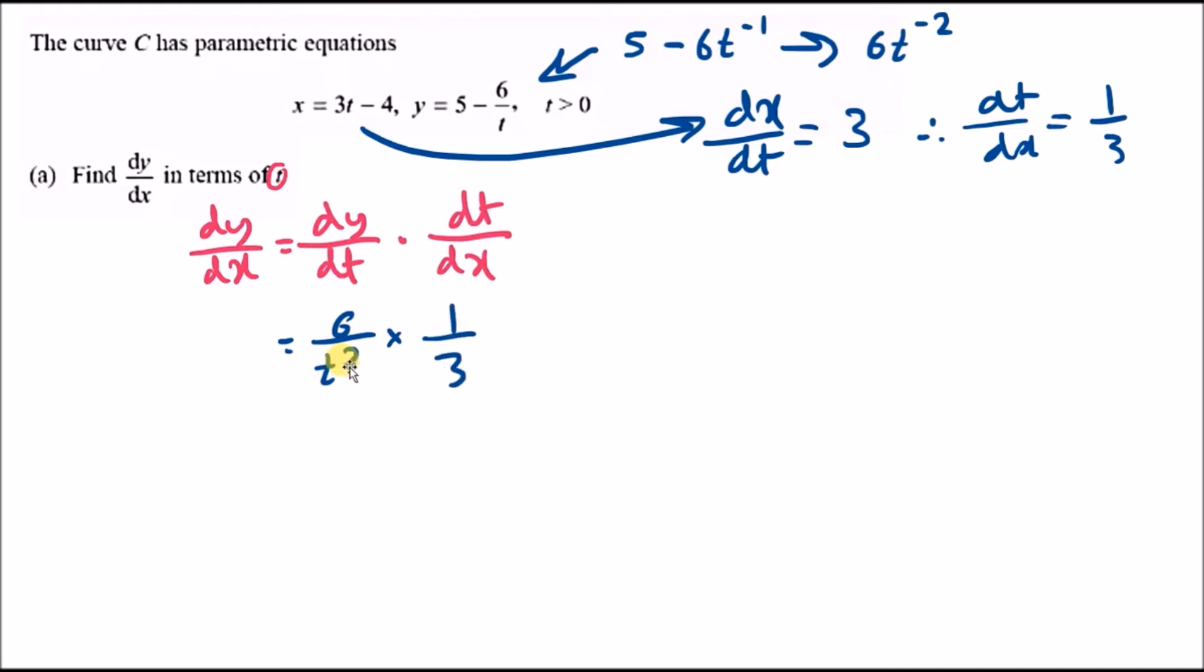Now we just simplify. Do some cross-simplification: 6 and 3 both divide by 3, so that's 2 and 1. It's literally 2 times 1 which is 2, and t squared times 1 is t squared. So the answer is 2 over t squared.